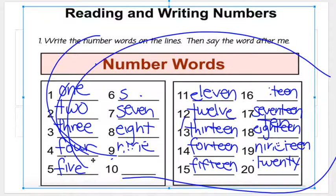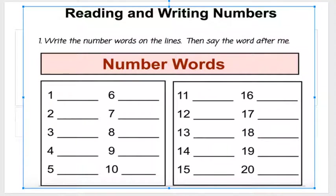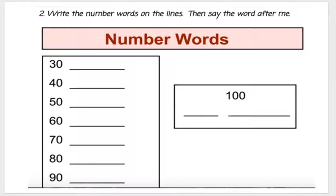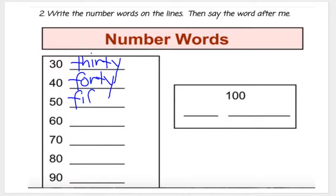I'll try and erase this for you. Okay students, now write the words on the lines and say the word after me. Here's number thirty. Number thirty. Here's number forty. Number forty. Here's number fifty. Say fifty.